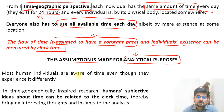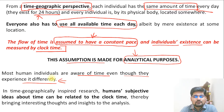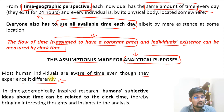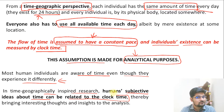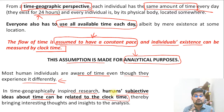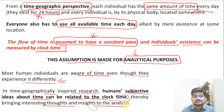Most human individuals are aware of time even though they experience it differently. In different connotations, different ways, and different practices, time is embedded for them. In time geographically inspired research, humans' subjective ideas about time can be related to clock time. Clock time or standard time reduces subjectivity — every subjective experience of time can be related to one clock time, thereby bringing interesting insights to time geographic analysis.